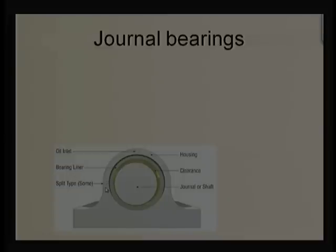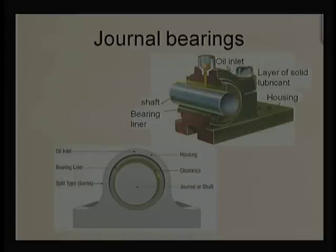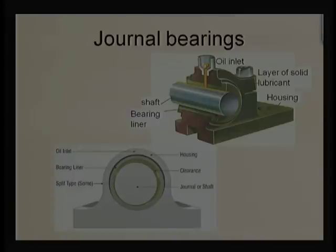Housing may be split so that assembly and disassembly of the bearing is easier. Depending on the configuration, we can classify bearings. If it is a single piece, we call it a bushing; if it is split into two parts, then we call it a bearing. The shaft surface should be kept very smooth — particularly less than 1 micron, say 0.3, 0.2, or 0.4 microns.